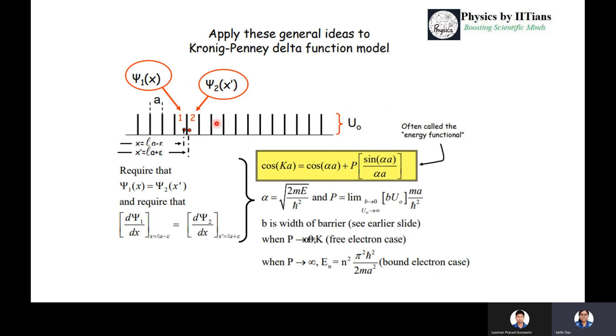What is the meaning of that? Suppose we apply the general ideas of the Kronig-Penney delta function model. We are taking this periodic potential and requiring that ψ_1(x) equals ψ_2(x'), and also requiring that the first derivative of the potential must be continuous: dψ_1/dx should equal dψ_2/dx at x equals La±ε. We get this final expression, also called the energy functional, where α = √(2mEa²/ℏ²) and P = lim(B→0, U_0→∞) BU_0ma²/ℏ². Here P is the width of the barrier.